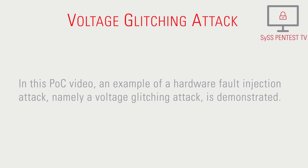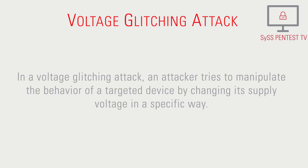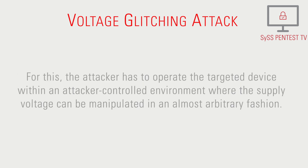In this proof-of-concept video, an example of a hardware fault injection attack, namely a voltage glitching attack, is demonstrated. In a voltage glitching attack, an attacker tries to manipulate the behavior of a targeted device by changing its supply voltage in a specific way. For this, the attacker has to operate the targeted device within an attacker-controlled environment where the supply voltage can be manipulated in an almost arbitrary fashion.